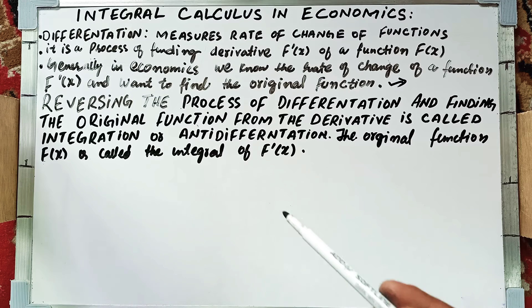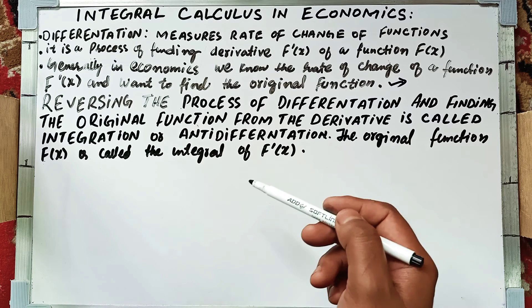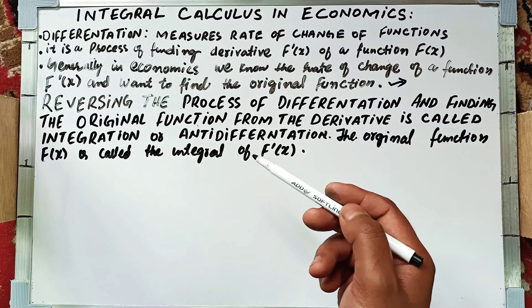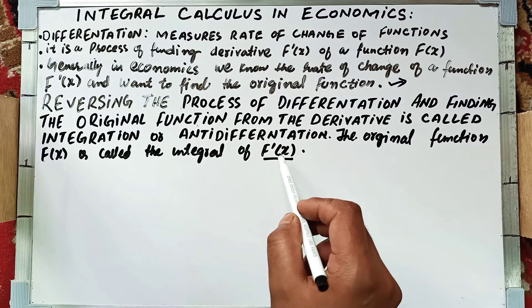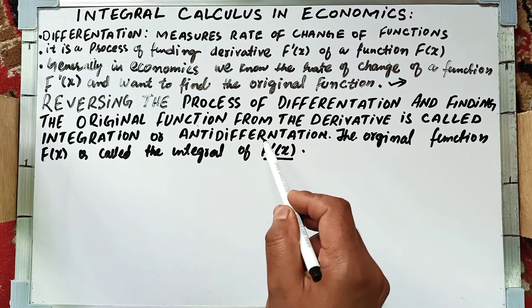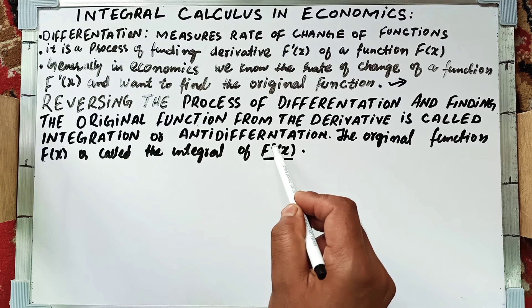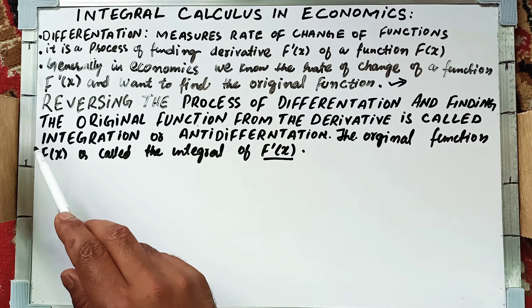If we reverse the process of differentiation, that means we are integrating. If this is the original function and this is the derivative function, and if we integrate this function, we will get the original function F(x).